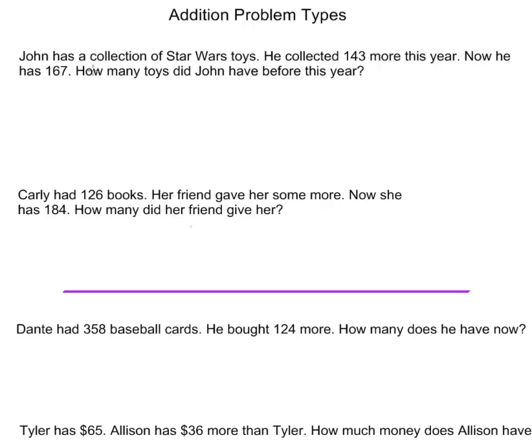To set up our number sentence, we need to follow our story problem in order. John has a collection of Star Wars toys. He collected 143 more this year. I do not know how many he started with, so I'm going to use a variable to represent my unknown number, and I'm going to write J for John.